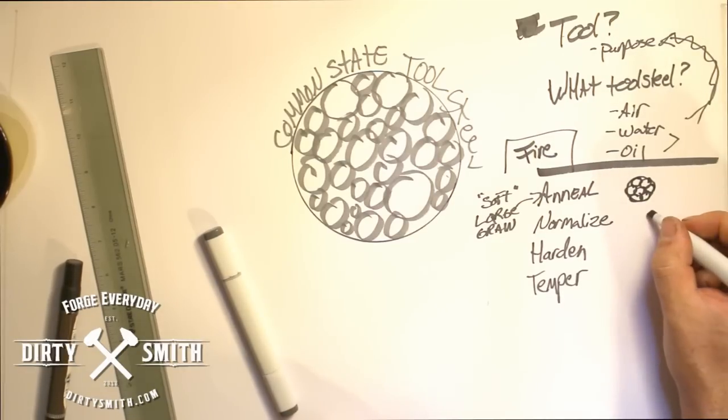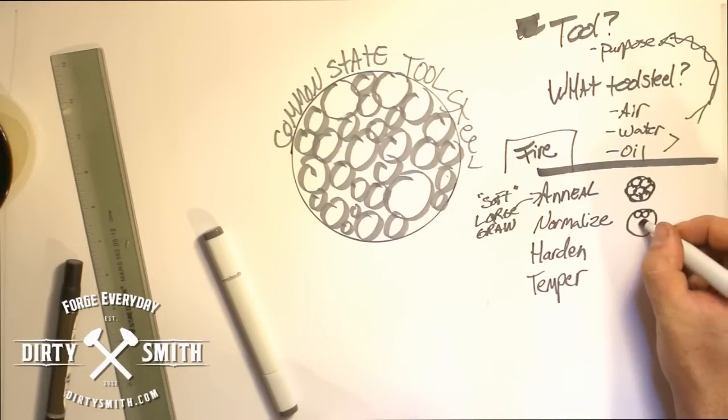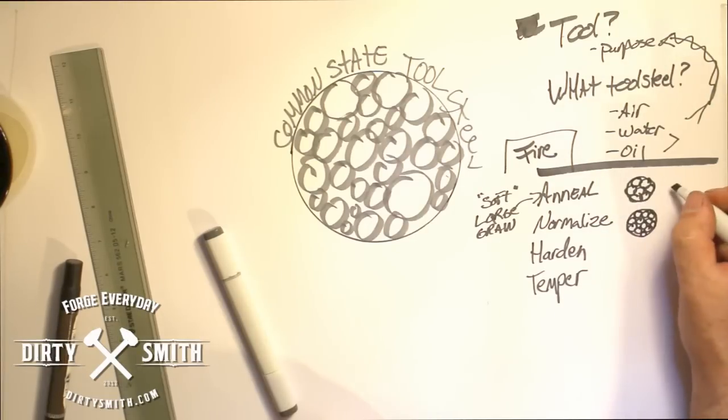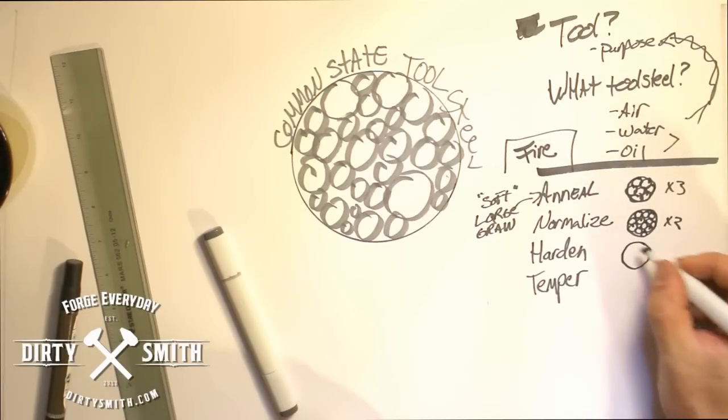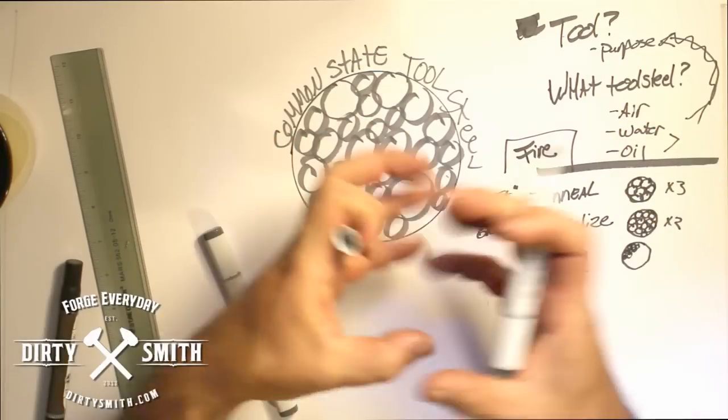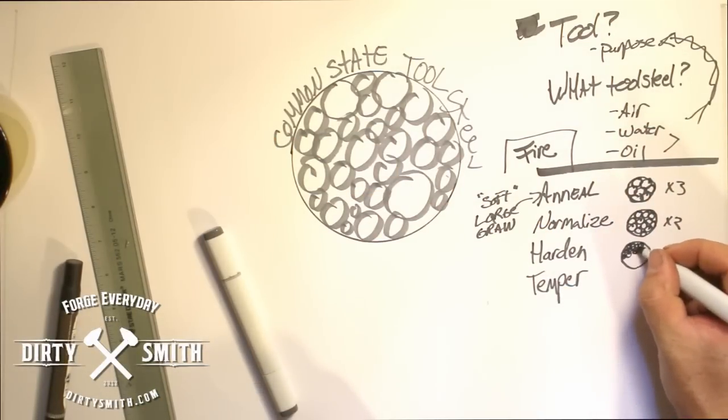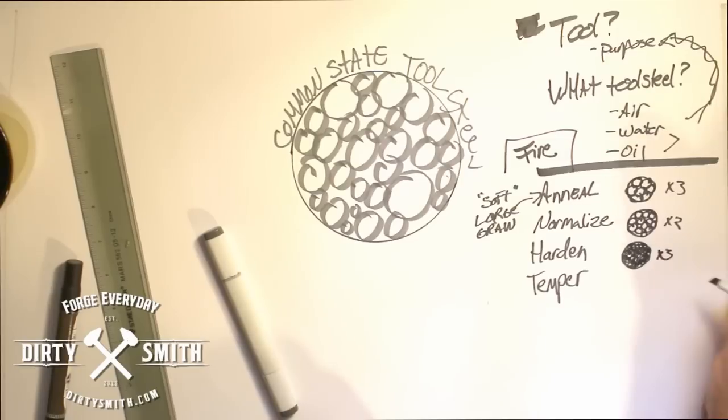Annealing - I'm going to exaggerate these - but if the grain is as big as possible, normalizing we get it up to temperature and let it air cool and the grain is going to a state that it likes to be at. We're doing this all multiple times. Annealing I usually do three times and normalizing I do at least twice. When we come to hardening, all these molecules are compact. Everything loosey-goosey comes and then constricts together and that's what makes it hard as all these molecules are jam-packed in there.